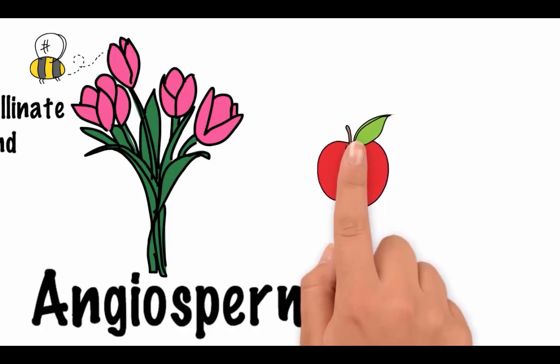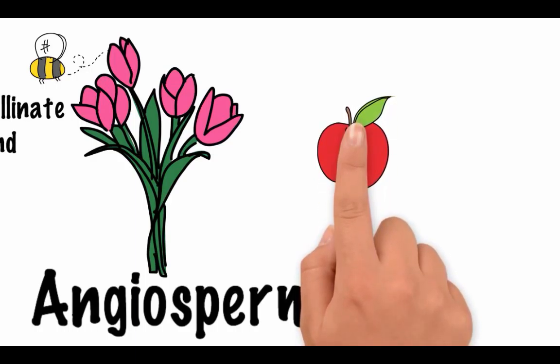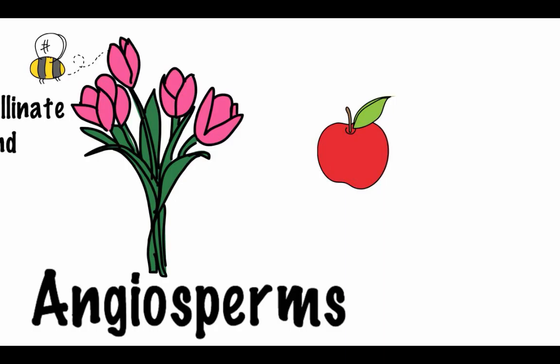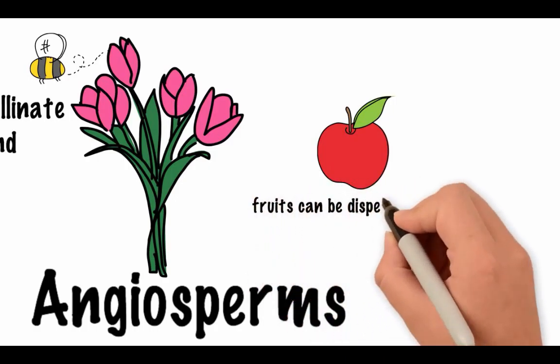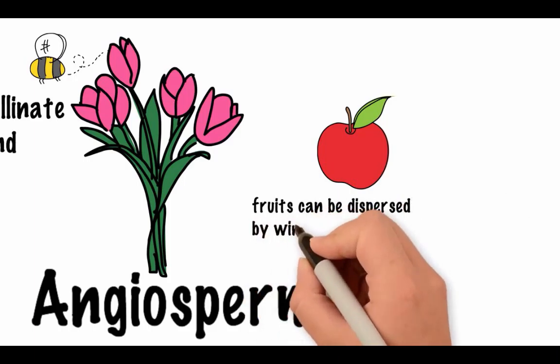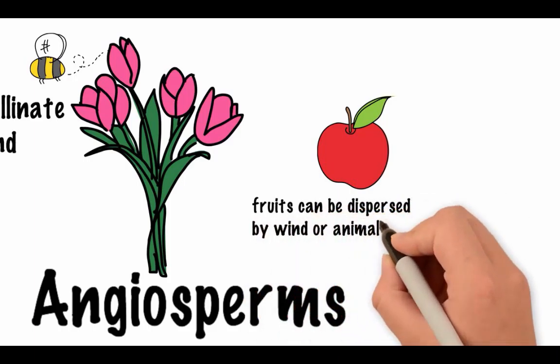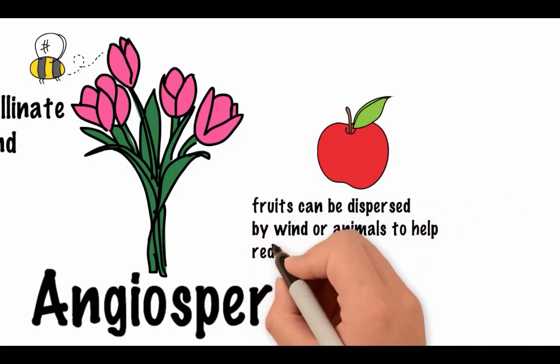The ovary contains the seeds and will develop into the fruit. Fruits help ensure that seeds are dispersed farther away from the parent plant. We will talk more about angiosperm reproduction later in the lesson.